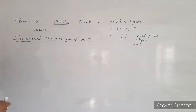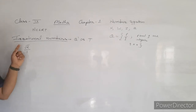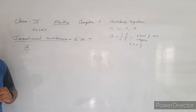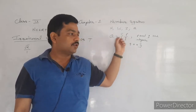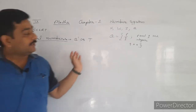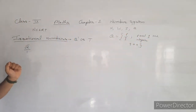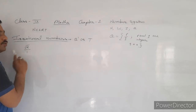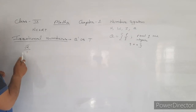Let us look at some examples. Take root 2. We can express it in the form of root 2 upon 1, but under root 2 is not an integer. For a number to be rational, all three conditions must apply: p upon q form, p and q both integers, and q not equal to zero. Here, root 2 upon 1 satisfies the p upon q form, but under root 2 is not an integer. Therefore, under root 2 is an irrational number because p and q are not both integers.